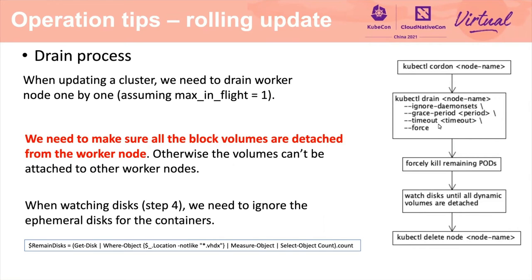Usually after this step, all the pods on the node should have already been evicted. But somehow some pods may still be running for various reasons. In this situation, we need to force delete such pods. Next, we watch and wait until all block volumes are detached from this worker node. This is important — if a block volume is not detached from this worker node, then it cannot be attached to another worker node, and the pod would assume the PV is not healthy. Please note that we need to ignore the ephemeral disks created for containers, because we should only care about the block volumes for PVs.